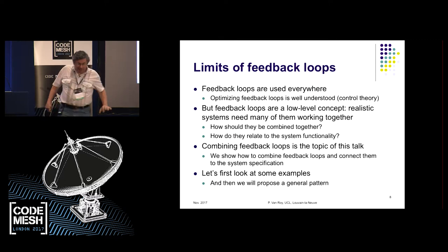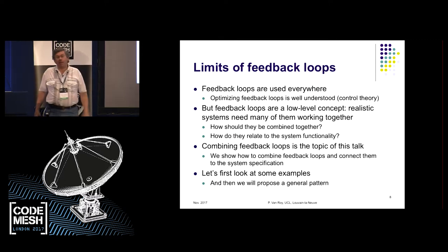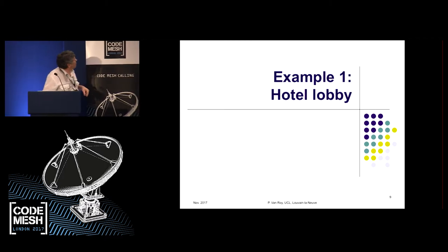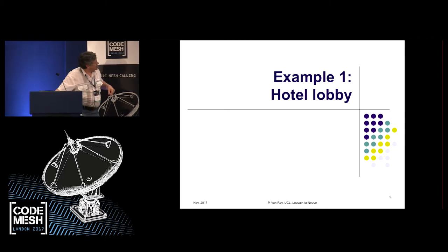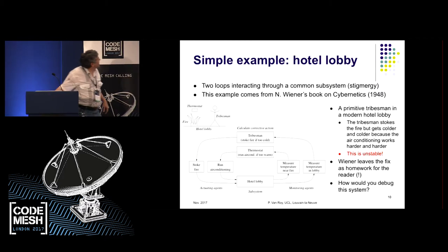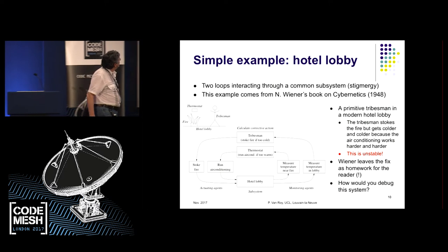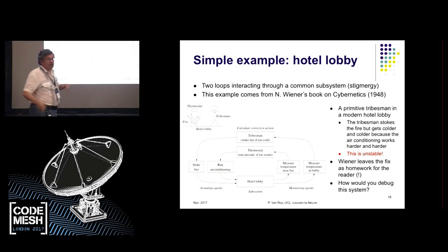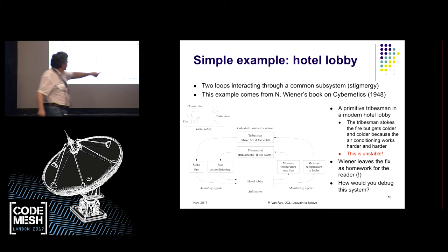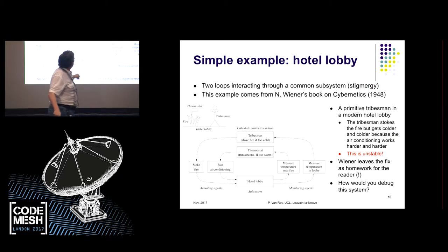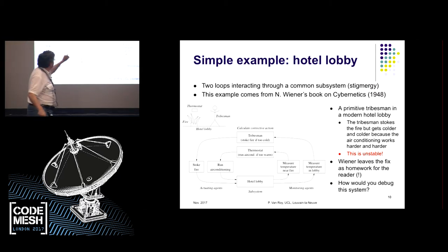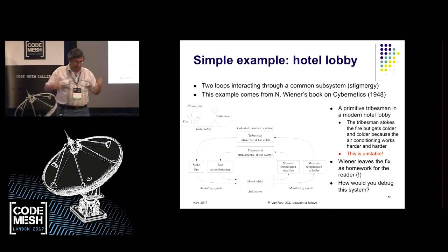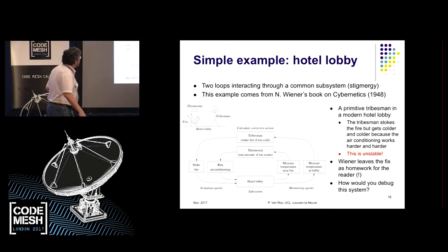Let me show lots of examples. Here's the hotel lobby example. We have a hotel lobby with an air conditioner — a thermometer, a thermostat — it runs the air conditioning if it gets too warm. It keeps it nice and cool.